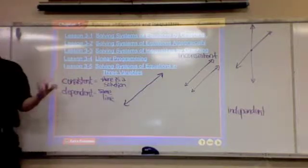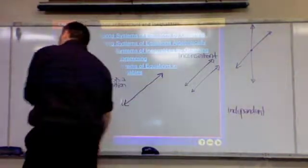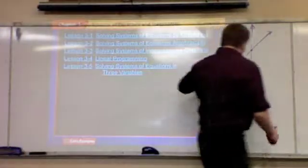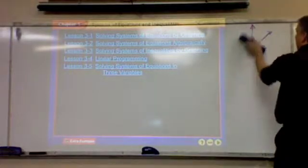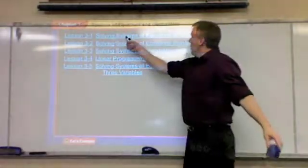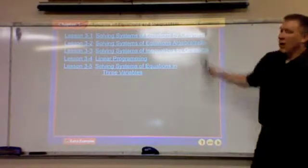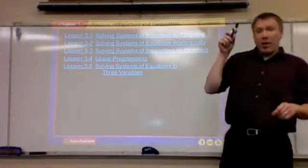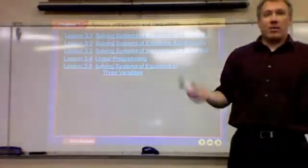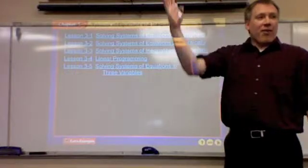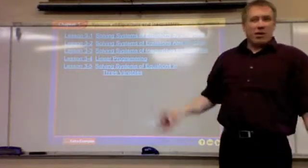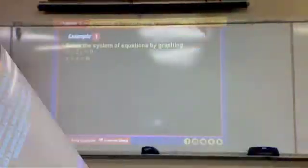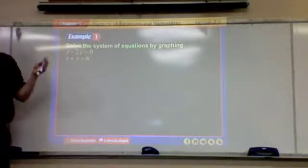So those are the vocabulary words, and they'll ask you questions about them. The next thing is solving by graphing — that's why this lesson is pretty simple. We're going to graph the two lines and the answer is the point where they cross. If you know how to graph a line, just graph one, then do the other one, and see where they cross.